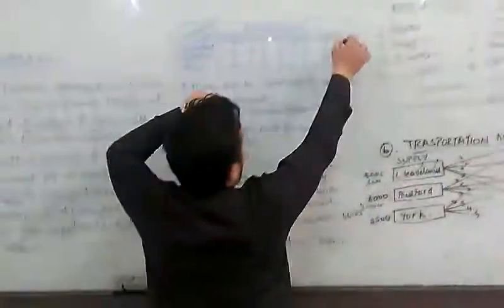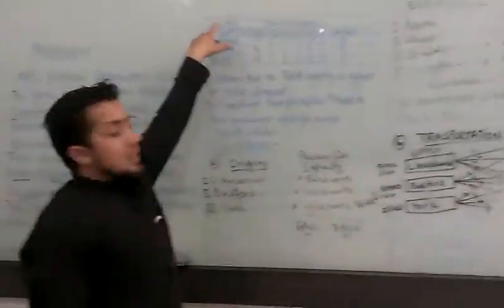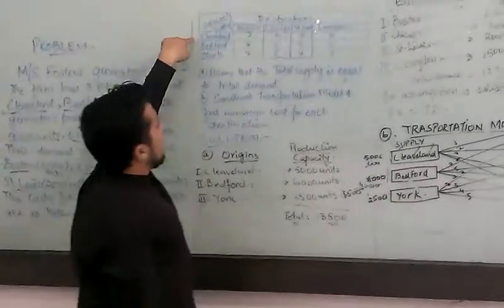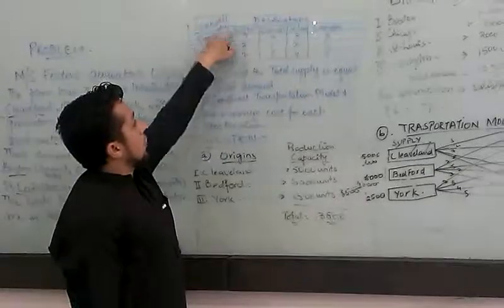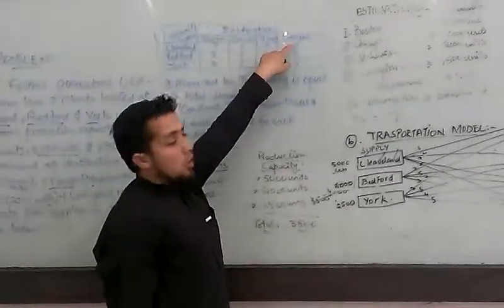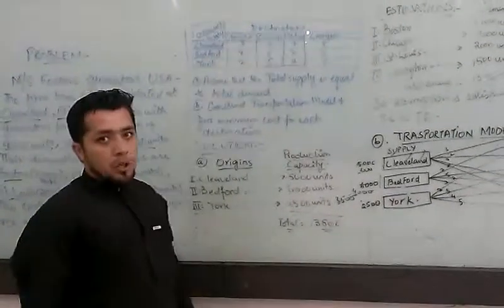Now look at it. In here in the table, we can see the cost per unit. For Cleveland, the distribution cost is $3, $2, $7, and $8. And for Bedford, we have $7 here.